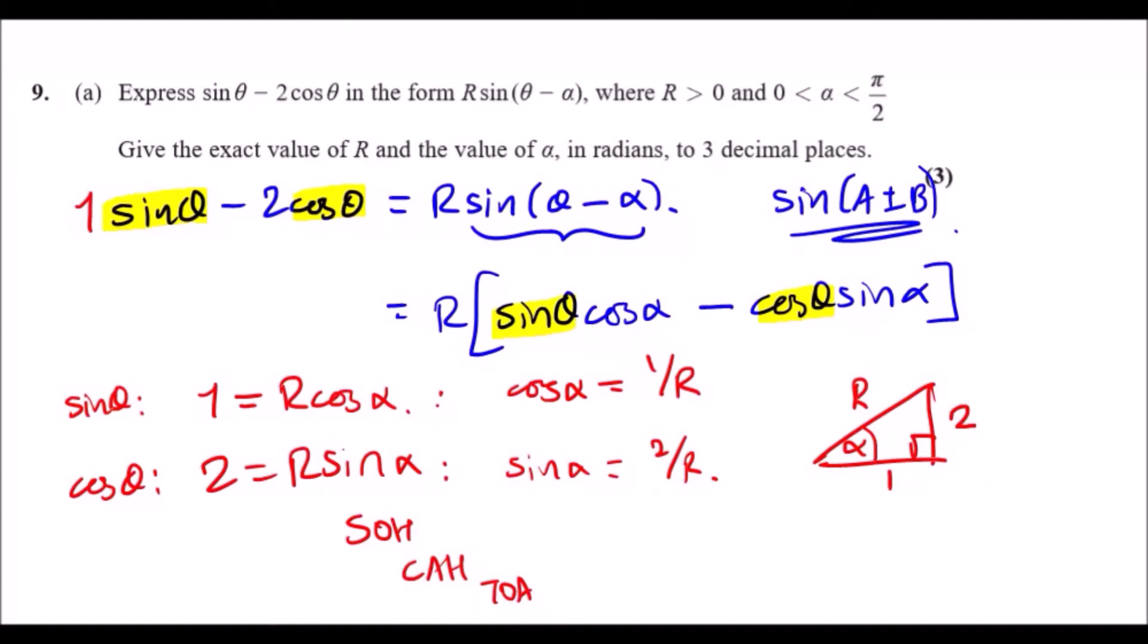To work out R, just use Pythagoras. We would say 1² + 2² must equal R², and if you square root that you'll get R equals √5.